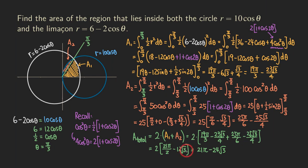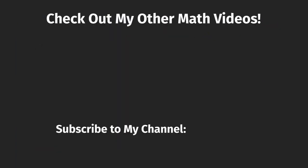To summarize this problem: we broke the region into two smaller regions, set up an integral for the area of each region using the appropriate curve, added them together, and then doubled to account for symmetry. That's it for this problem. If you like this video, please subscribe to my channel, give me a like and a comment, and check out my other videos. Thank you for watching!